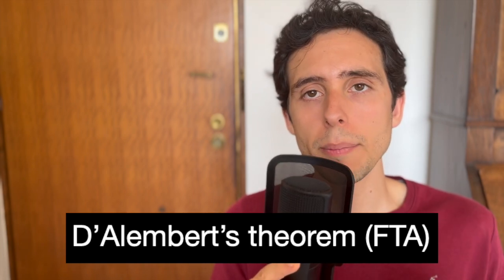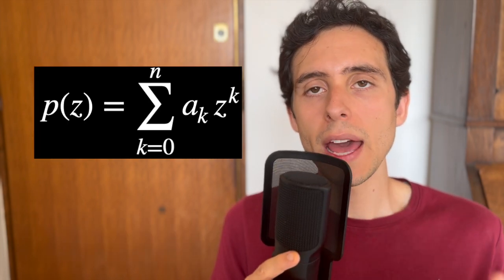In mathematical terms, the fundamental theorem of algebra, or D'Alembert's theorem, says that if we have a polynomial where the coefficients are complex numbers and the variable z is complex as well, with n greater or equal than 1, then there exists a point in the complex numbers, z0, such that p of z0 is 0. So you can find roots for this polynomial.